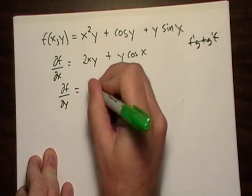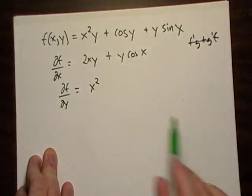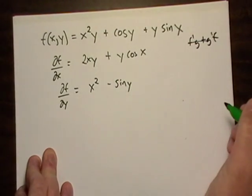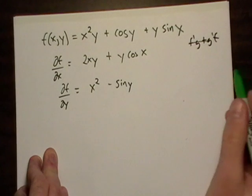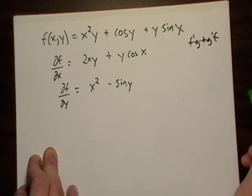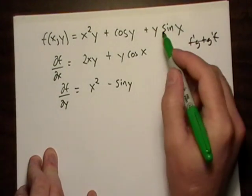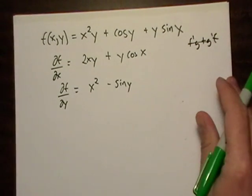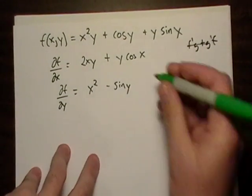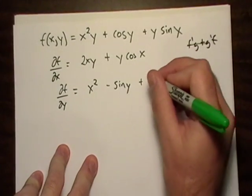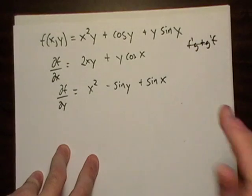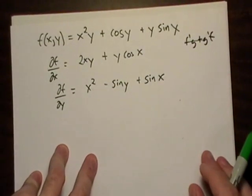Well, x squared is just going to be a constant. Negative sine y is what we got going on there. And since x is constant here, it kind of acts like the coefficient. So that is sine x is pretty much a coefficient to y in a sense.